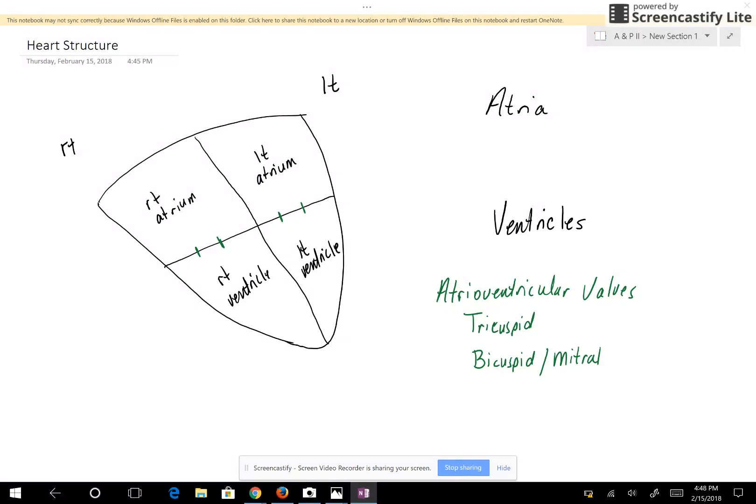The other two valves are at the base of the pulmonary trunk. Let me draw the pulmonary trunk in, and it's right here. That valve is the pulmonary semilunar valve, or just the pulmonary valve.